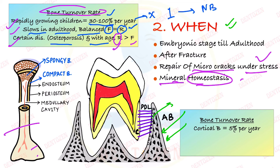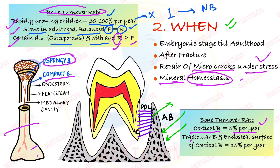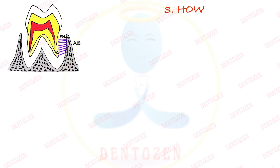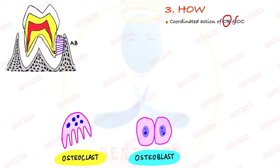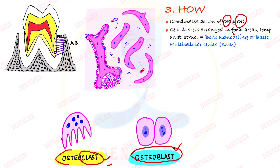In compact or cortical bone, the turnover rate is 5% per year. In spongy or trabecular bone and the endosteal surface of compact bone, it is higher at 15% per year. Bone remodeling is carried out by two cells — osteoblasts (bone forming) and osteoclasts (bone resorbing) — which cluster together in focal areas forming a bone remodeling unit, also called the basic multicellular unit (BMU), with both resorbing and depositing cells present.